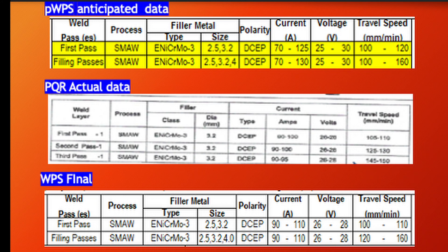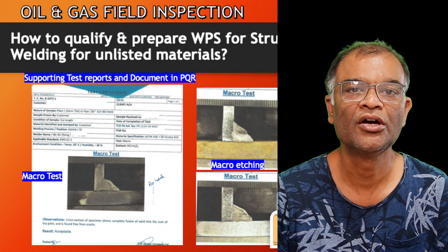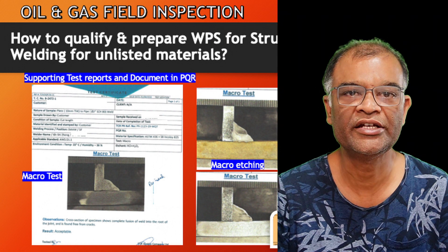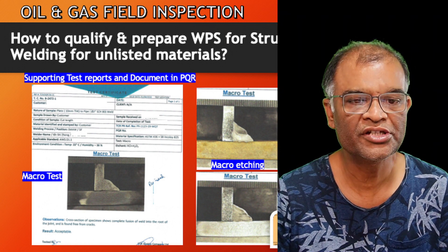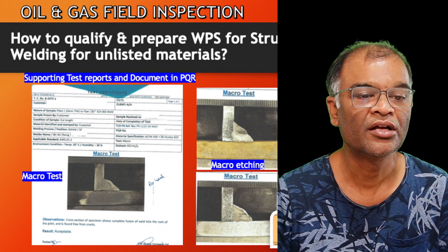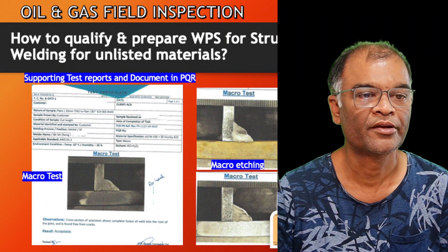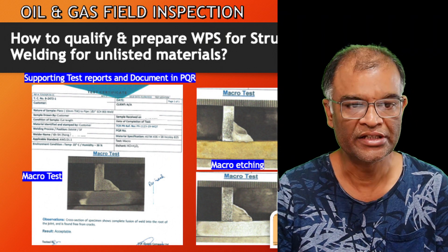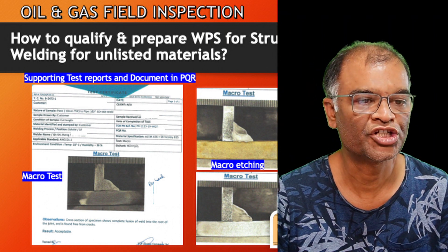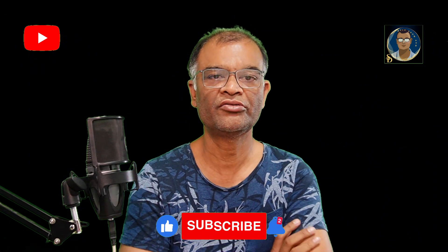Now you can see the supporting test documents and test reports in the PQR. First, the welding inspector from the third party performs visual examination, which was acceptable. Then the piece is taken for destructive testing. Macro etching tests the fusion range and depth of fusion between plate and pipe, clearly visible in the photos shown. Based on the macro etching test this fillet weld is acceptable, so the WPS can be submitted with the PQR attached. It is quite similar to the pre-qualified WPS, but with the PQR as an attachment.